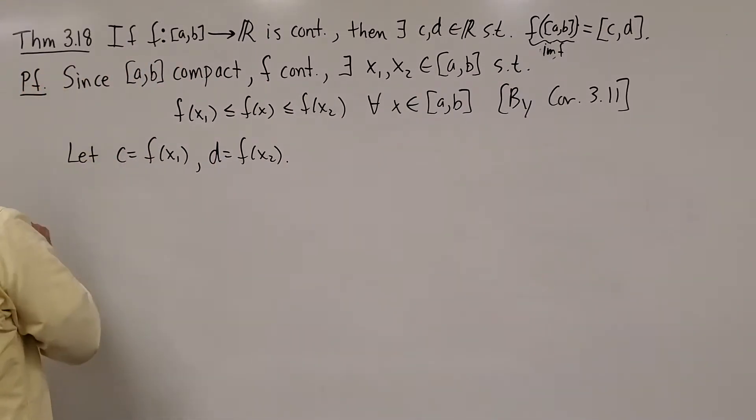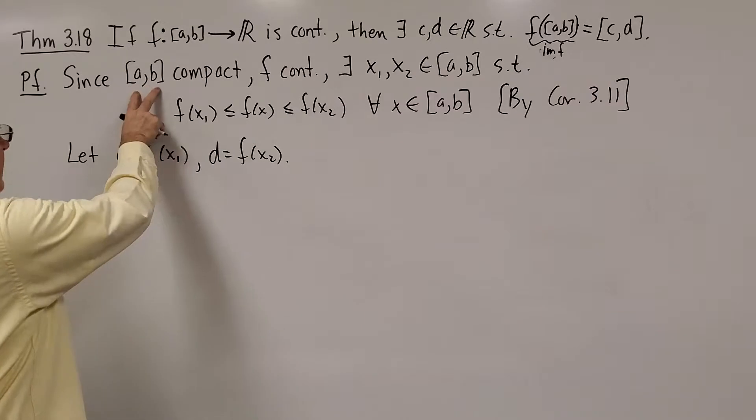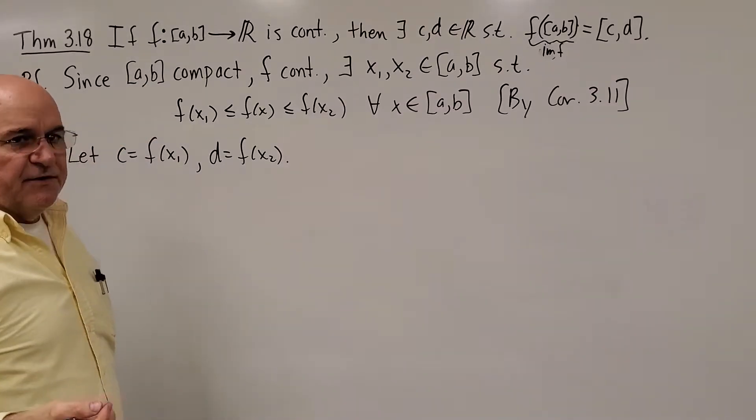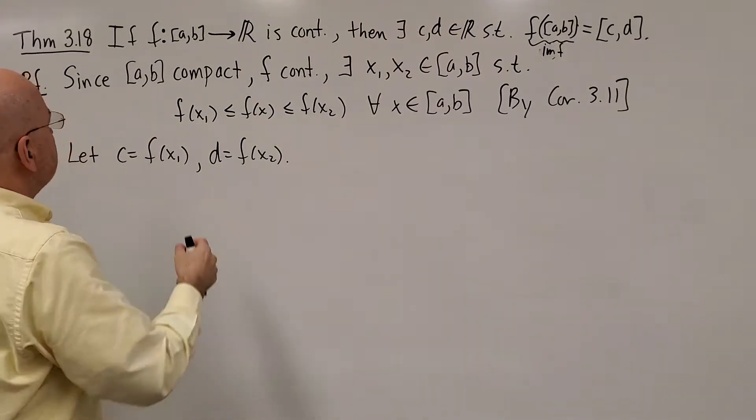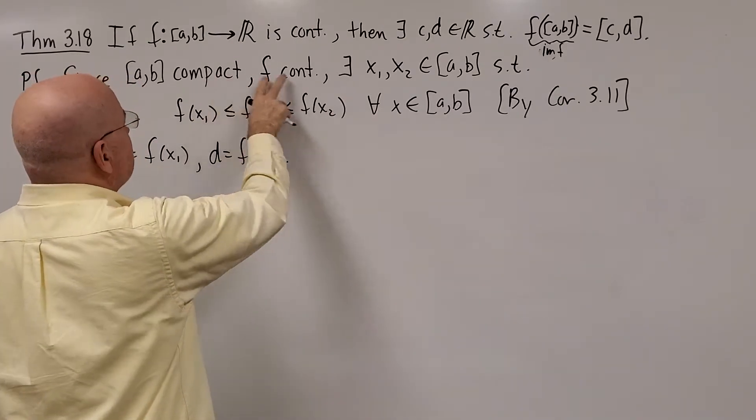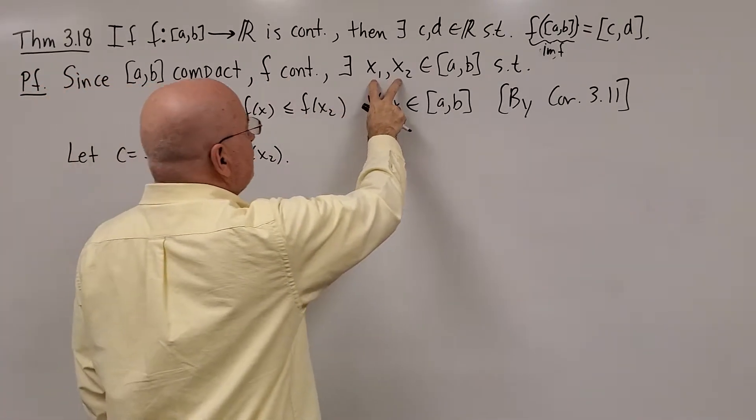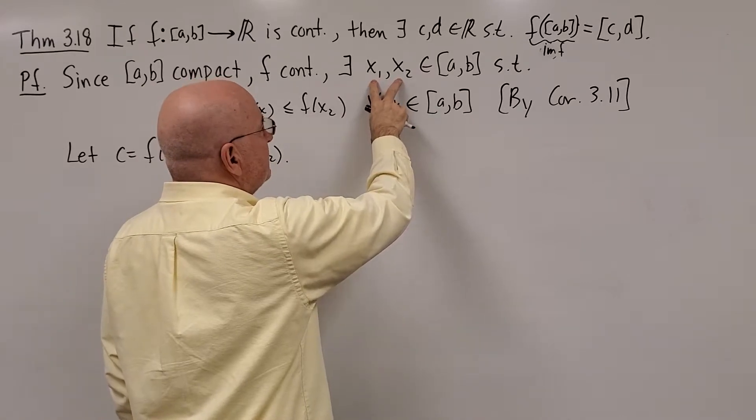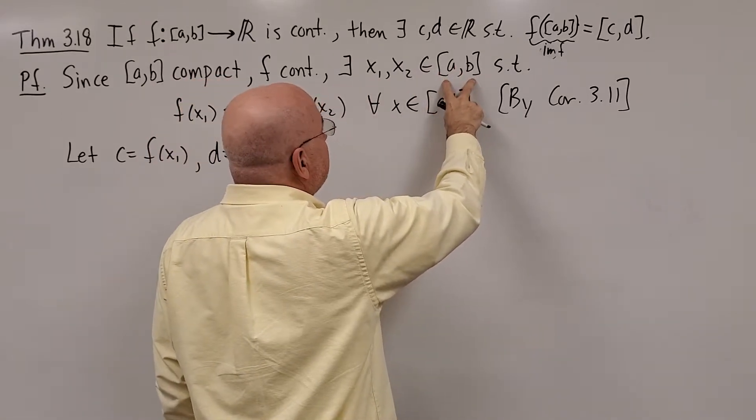Let's start the proof. Since [A,B] is a closed and bounded interval, it's compact. Since F is continuous, those two things imply that there are two numbers x1 and x2 somewhere in between A and B, it could be A and B.